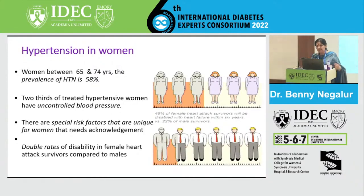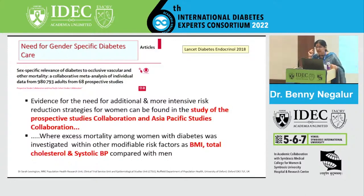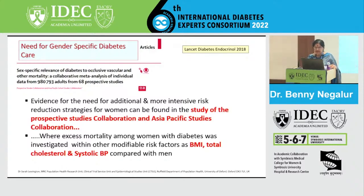Therefore, there is a need for gender-specific diabetes management. A collaboration of prospective studies from Asia Pacific involving more than 900,000 adults from 68 prospective studies found excess mortality among women with diabetes compared to men, even after accounting for BMI, total cholesterol, and systolic blood pressure. We need protocols and guidelines that include gender-specific recommendations at both global and Indian guideline levels.